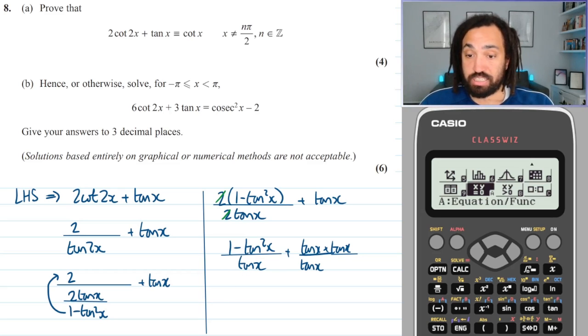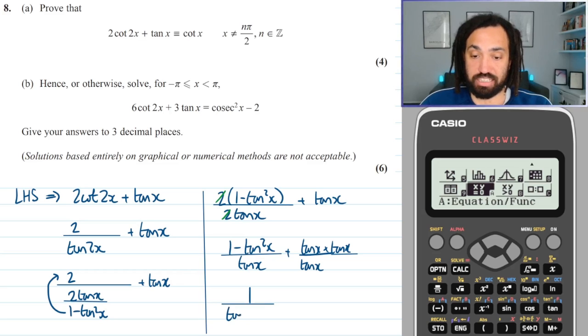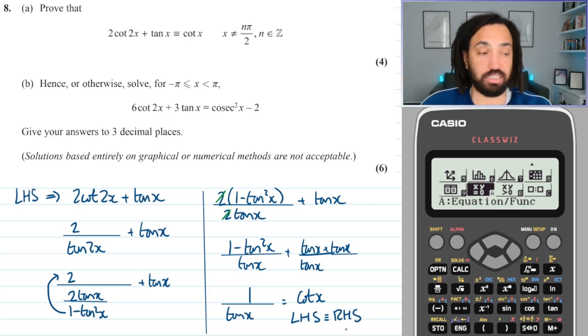So what have I got? When I add these numerators together I'm going to get 1 minus tan squared plus tan squared so that's just 1, and on the bottom I'm just going to get tan x. And as we know, the reciprocal of tan x is cot x, so therefore we can say that the left hand side is equivalent to the right hand side and we've done that proof. Lovely.